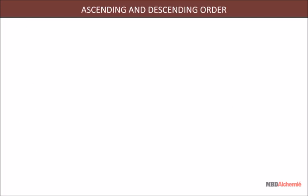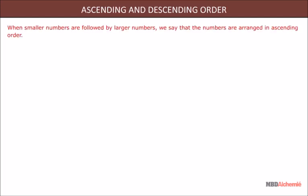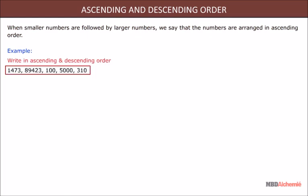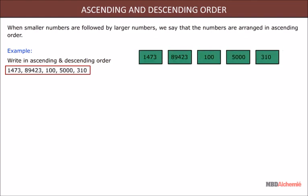Ascending and descending order of numbers. When smaller numbers are followed by larger numbers, we say that the numbers are arranged in ascending order. In this example, we will write the following in ascending and descending order.